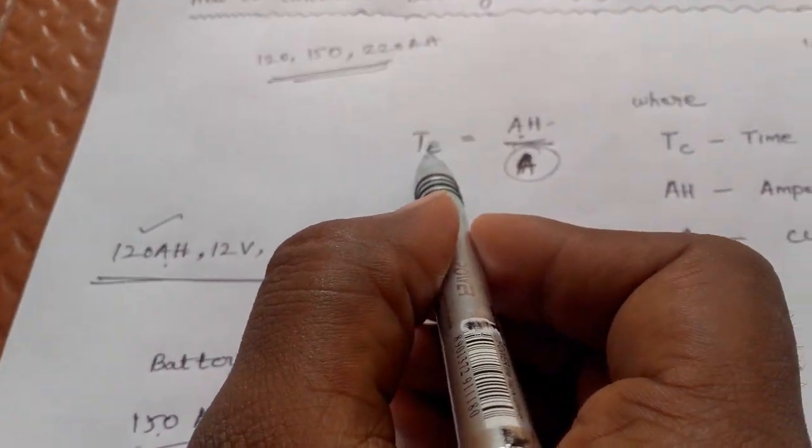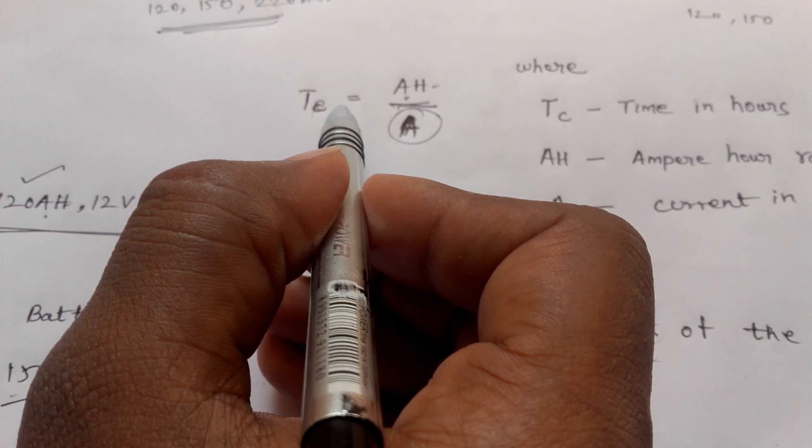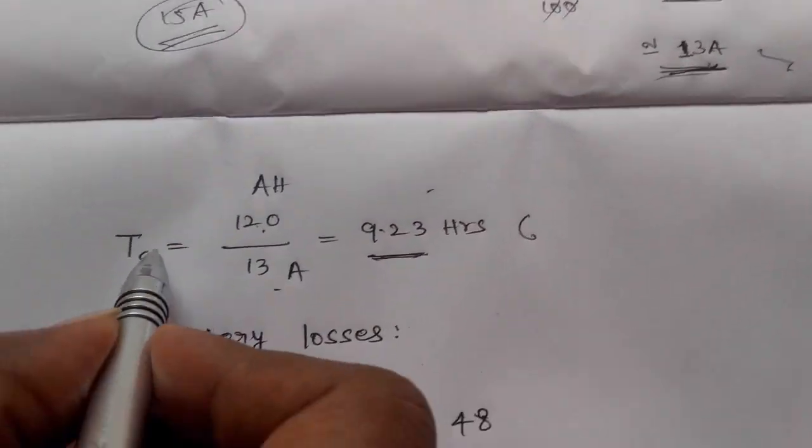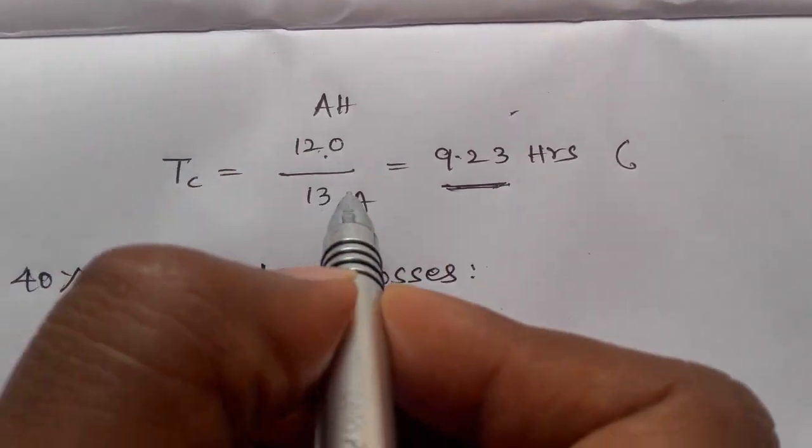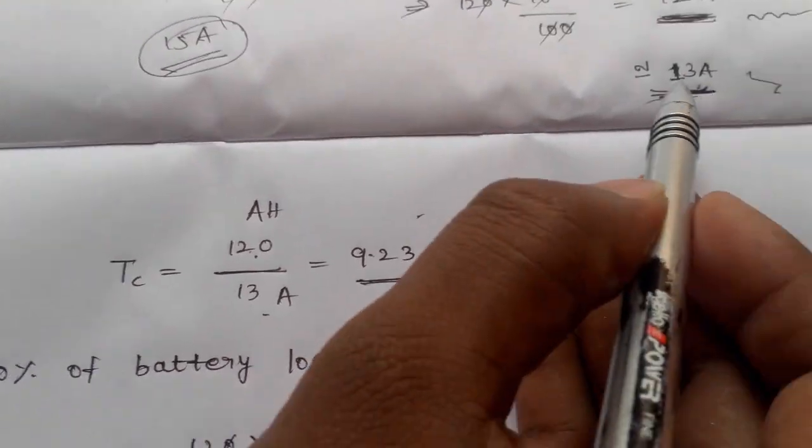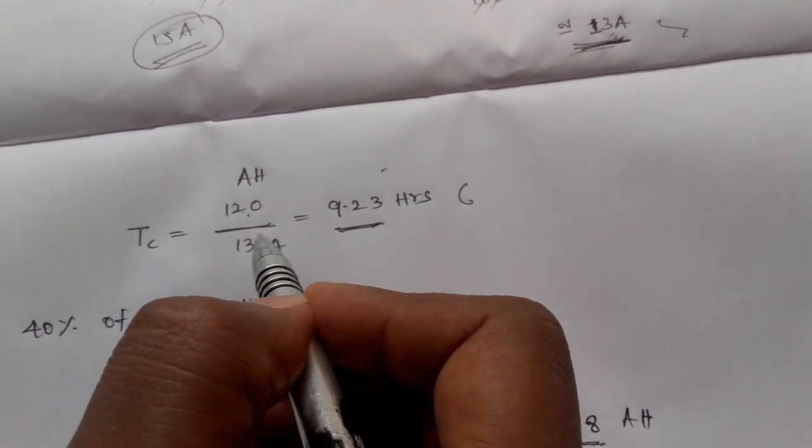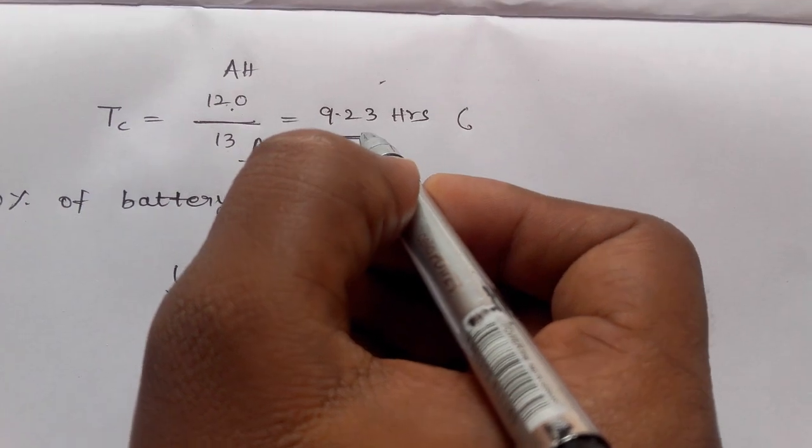Now we will calculate the charging time. Tc equals 120 ampere hour divided by 13 amperes, which equals 9.23 hours.